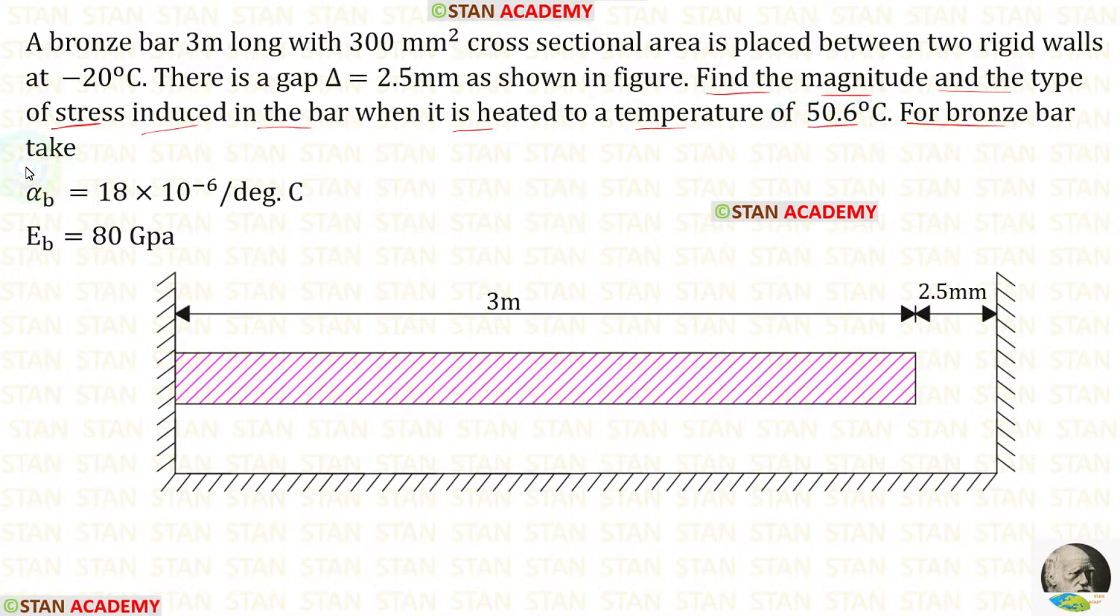For the bronze bar take alpha b equal to 18 into 10 power minus 6 per degree Celsius and Young's modulus Eb equal to 80 gigapascal. The gap delta can be taken as the yielding of the supports.